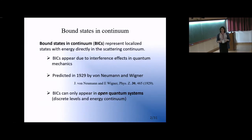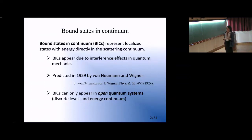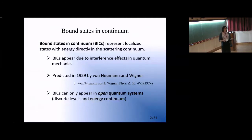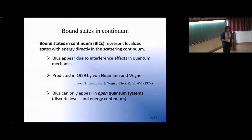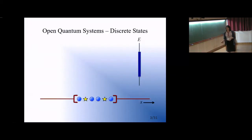Although BICs were first predicted in 1929 by von Neumann and Wigner, they still haven't been unambiguously detected in quantum systems. Note that according to this definition, bound states in continuum can only appear in open quantum systems — systems that have both discrete energies as well as an energy continuum, where the energy continuum is generally associated with some kind of environmental influence on the discrete part of the system.